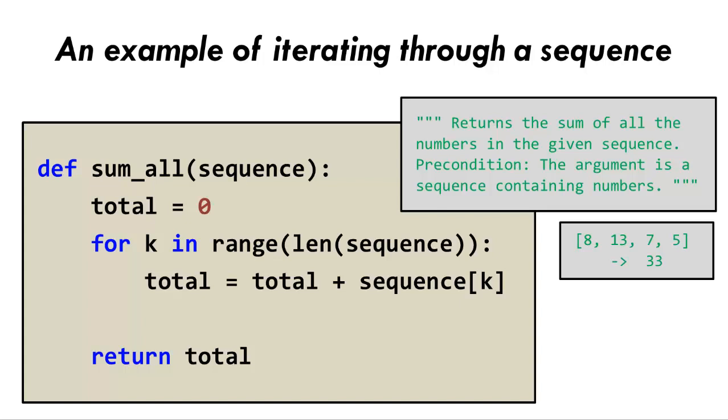We put the sequence name with the loop variable, here k, inside the square brackets.